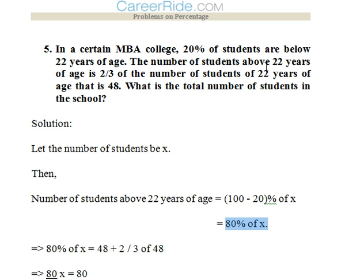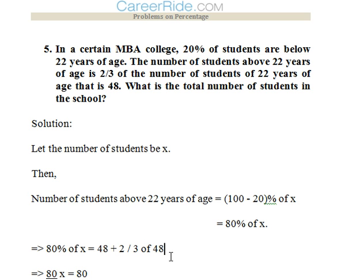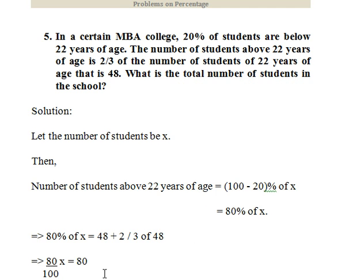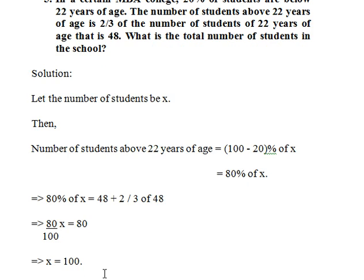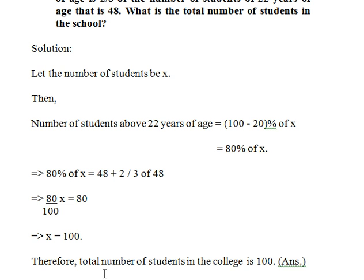The number of students above 22 years of age is 2/3 of the number of students of exactly 22 years of age, which is 48. So the number of students above 22 years = 2/3 x 48 = 32. Together, 32 + 48 = 80 students form 80% of x. So 80x/100 = 80, giving us x = 100. Therefore the total number of students in the college is 100.